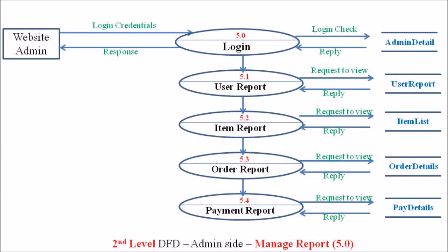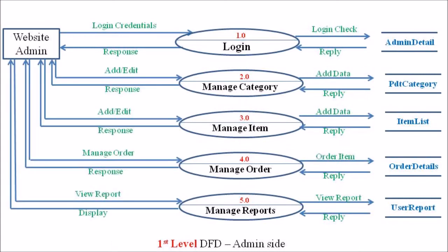Process 5.3 is the order report — the administrator can verify the different orders in process as well as previous orders. The final process is the payment report process, which is synchronized with the pay detail database — a two-sided database available to both the admin side and the customer side. So this is the second level DFD at the manage report level.